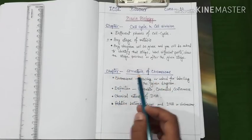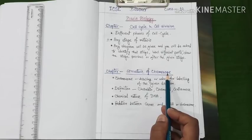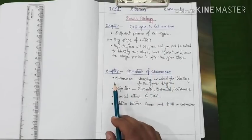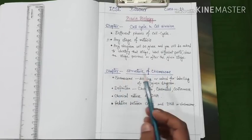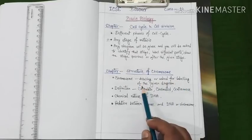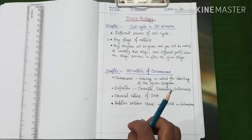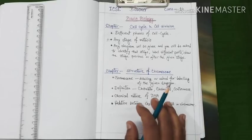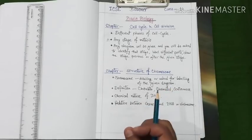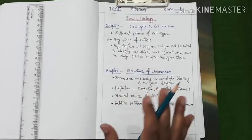Our next chapter under this unit is structure of chromosome. Let us find the important topics under this chapter. First, chromosome drawing or asked for labeling of the given diagram. That means you need to prepare this section with detailed diagram. The chromosomal arms, centromere, kinetochore, you should know these things.